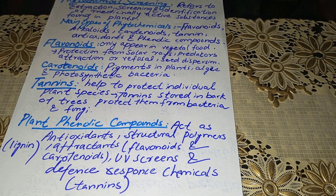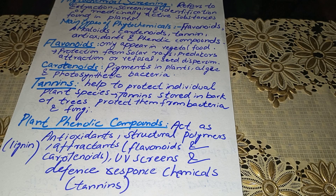Plant phenolic compounds are those phytochemical compounds that have major roles in plants. They act as antioxidants, they are structural polymers — for example, lignin — and they act as attractants, meaning they attract insects for pollination and seed dispersion.